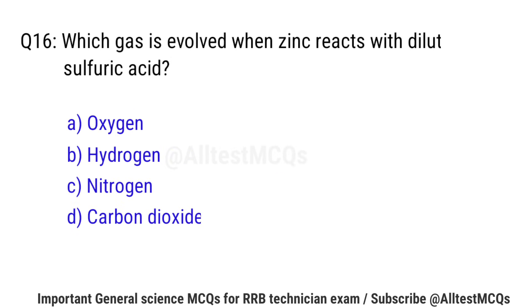Question No. 16: Which gas is evolved when zinc reacts with dilute sulfuric acid? Right option is B: Hydrogen.